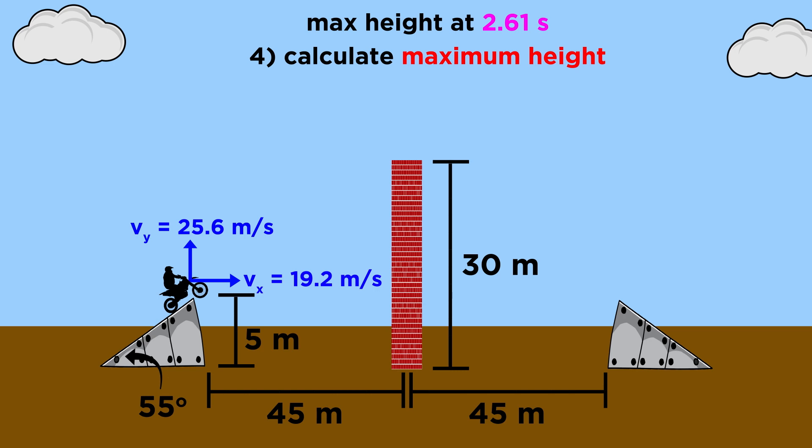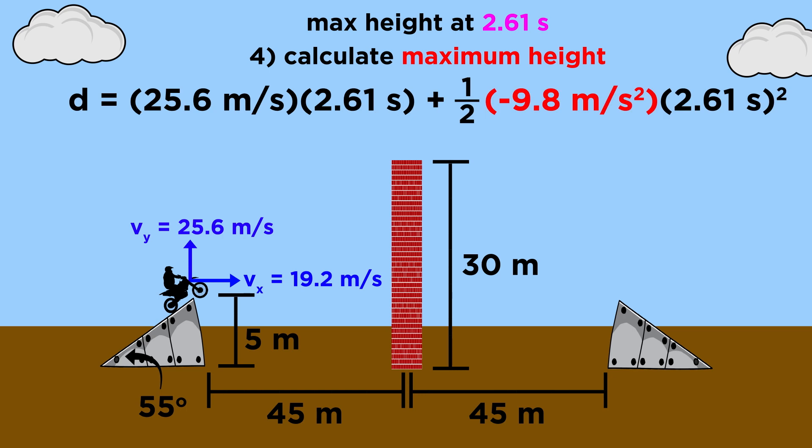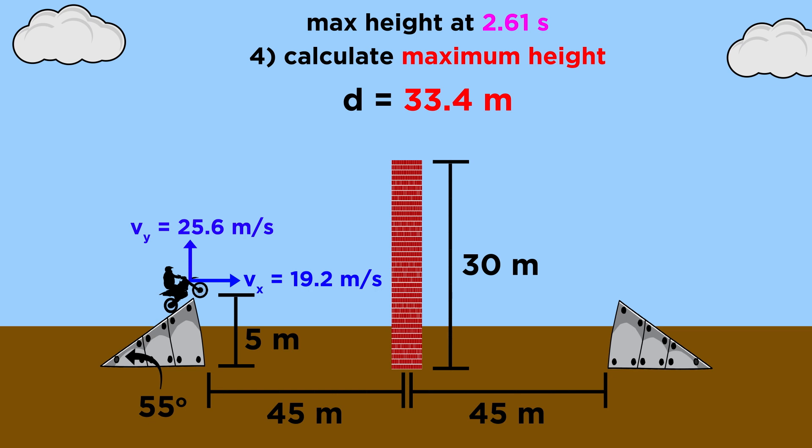So what will his height be at that moment? While we didn't have to consider gravity for the x direction, for the y direction we do. So let's use this equation. We can plug in the initial velocity, the time elapsed to reach the peak, and acceleration due to gravity. Then we just simplify a little bit, and we end up with thirty-three point four meters.